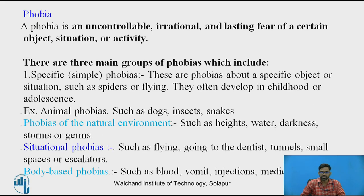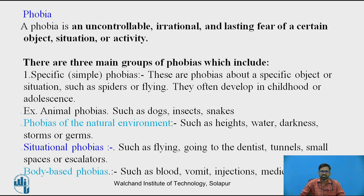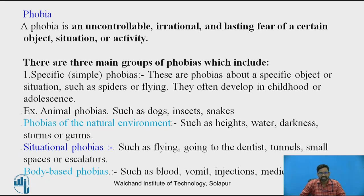Specific phobias are about specific objects or situations, such as spiders or flying. Animal phobias include fear of dogs, insects, and snakes. Phobias of the natural environment include height, water, darkness, and storms. Situational phobias include flying, going to the dentist, and small spaces. Body-based phobias include fear of vomiting and fear of injections or blood.